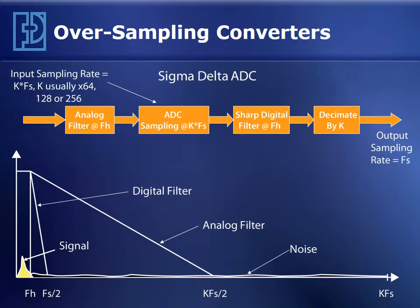Many data acquisition systems use a type of analog-to-digital converter called the sigma-delta converter. This is a type of oversampling analog-to-digital converter. The input sampling rate is typically 64, 128, or even 256 times the effective output sampling rate. Given that we have such a huge input sampling rate, it greatly simplifies the complexity of the analog filter we need to prevent aliasing. In fact, often we can get away with just a simple single-pole analog filter.